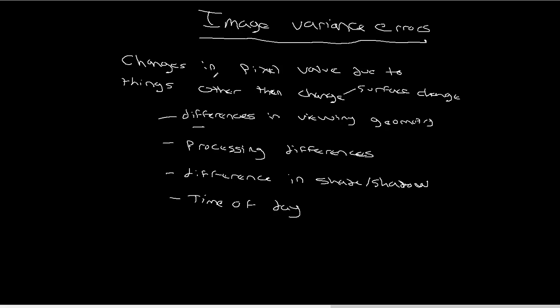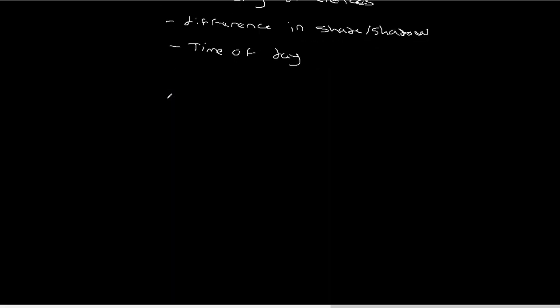I'm going to do two diagrams that will hopefully encapsulate this idea of image variance. The first one I want to diagram out and recap is what's actually happening to the sensor. So let's say at time one, our sun is here.